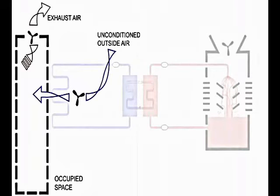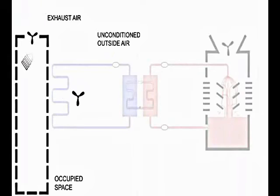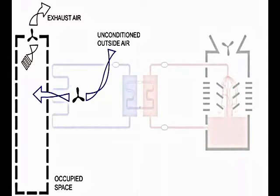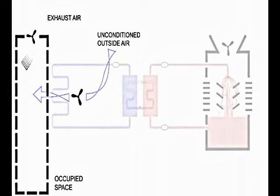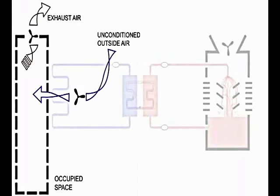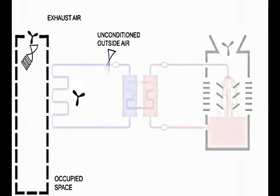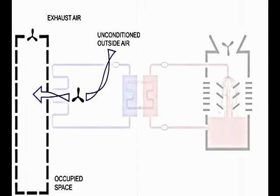Often an economizer cycle is not included in a mechanical package when it really should be. It is free cooling, and even when the economizer mode is available, it is often underutilized by building equipment technicians. That's why it's vital to have the architect, the mechanical engineer, the owner, and the building technician at the table together at the beginning of the design process to get everyone nodding their heads in agreement toward a common goal.